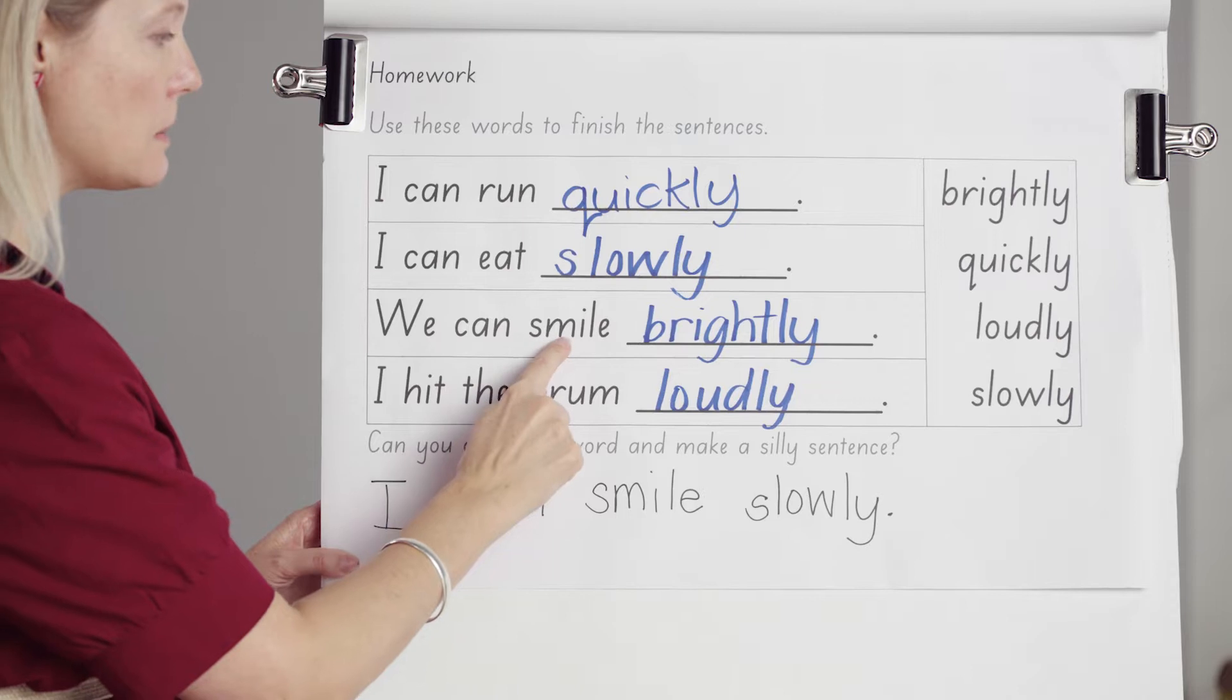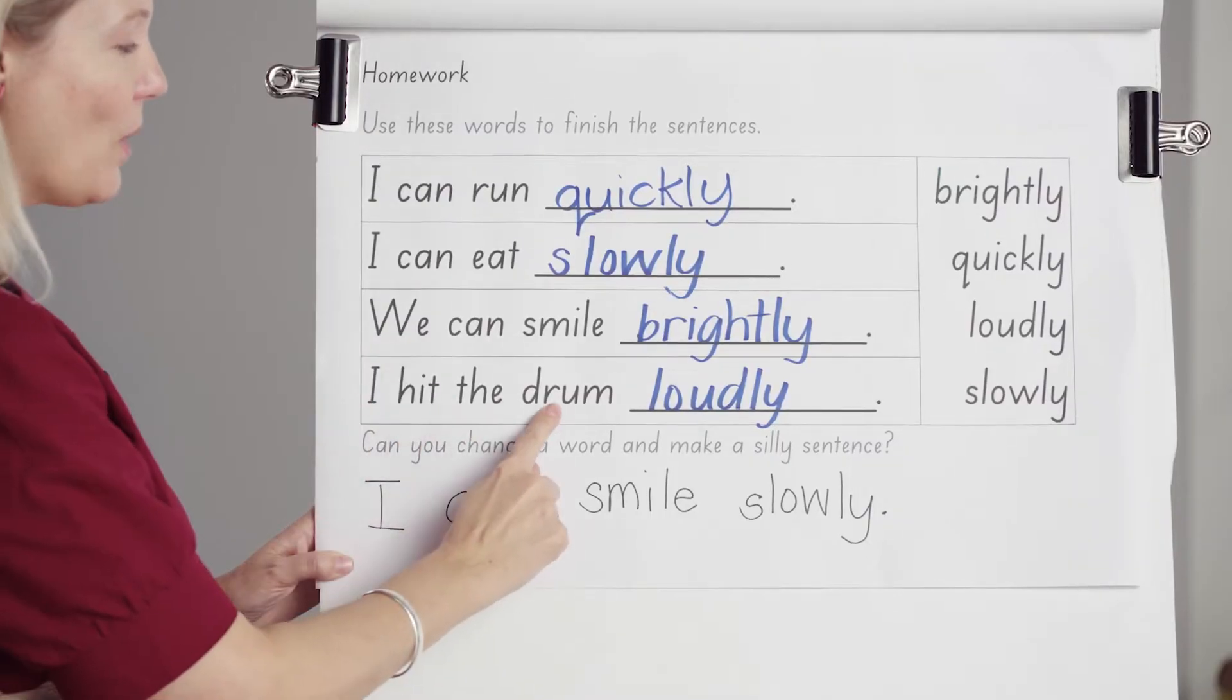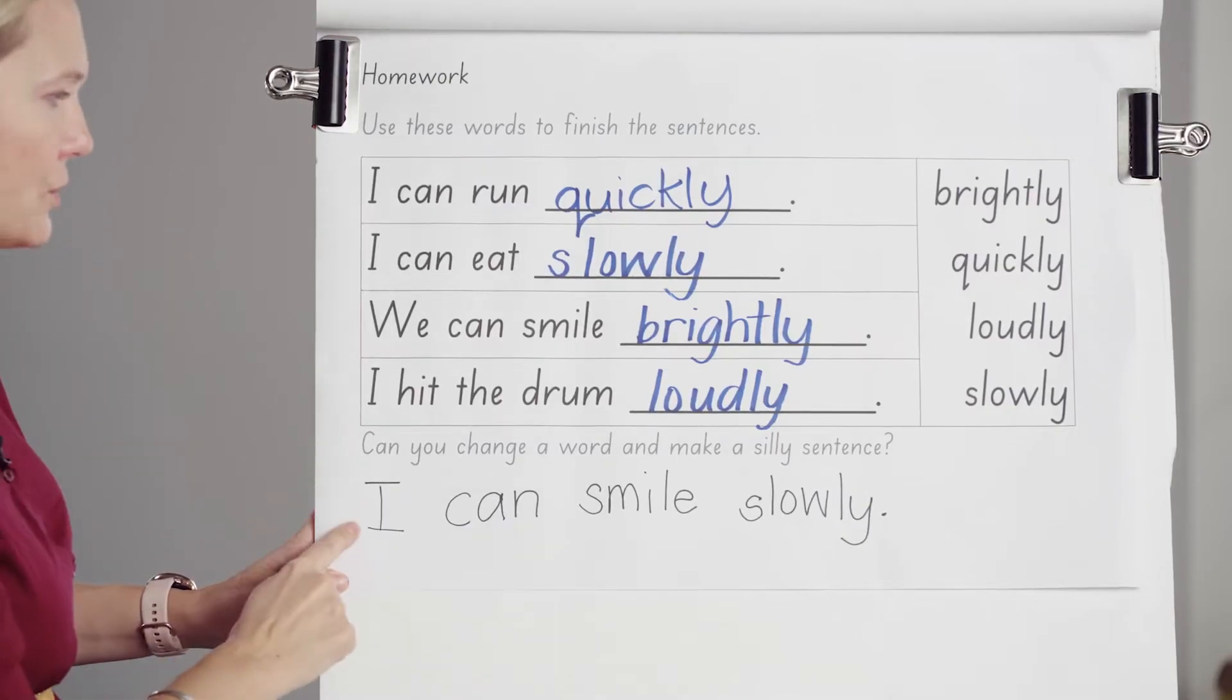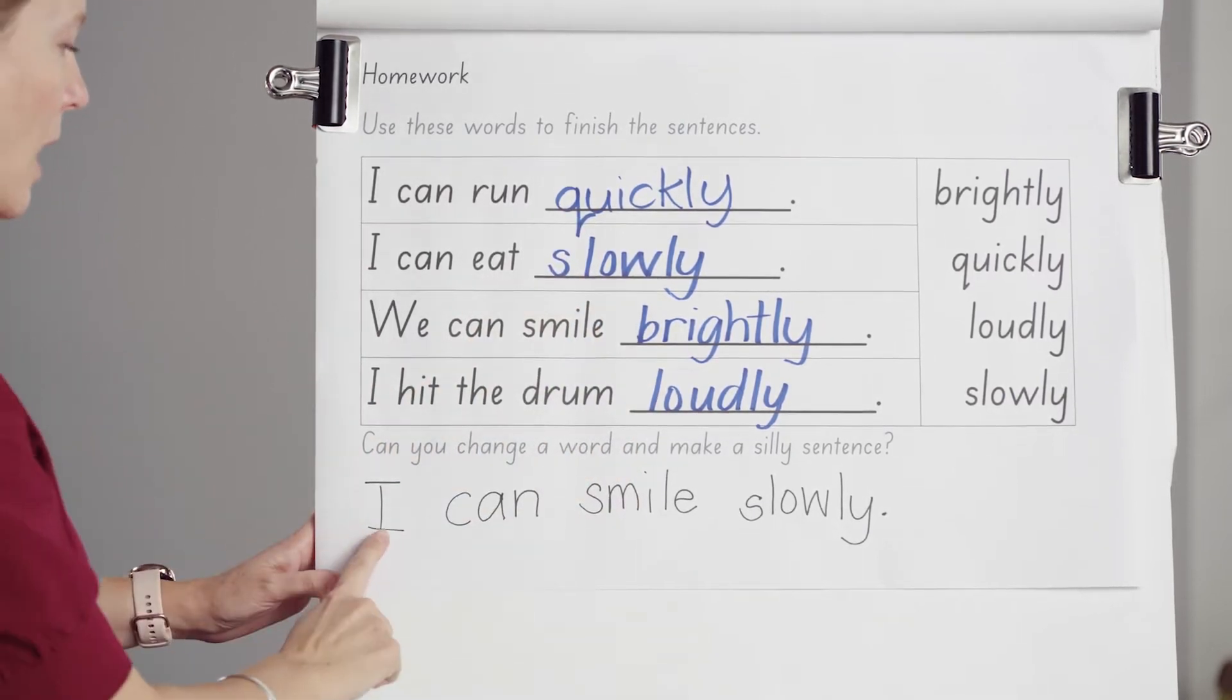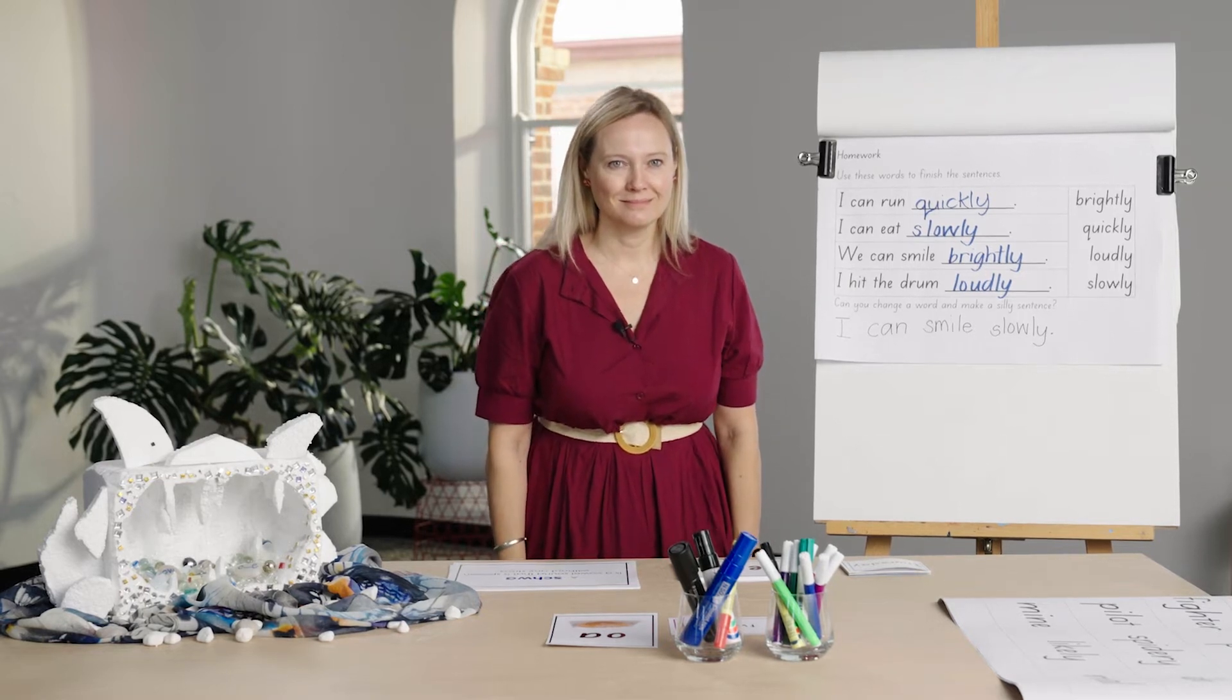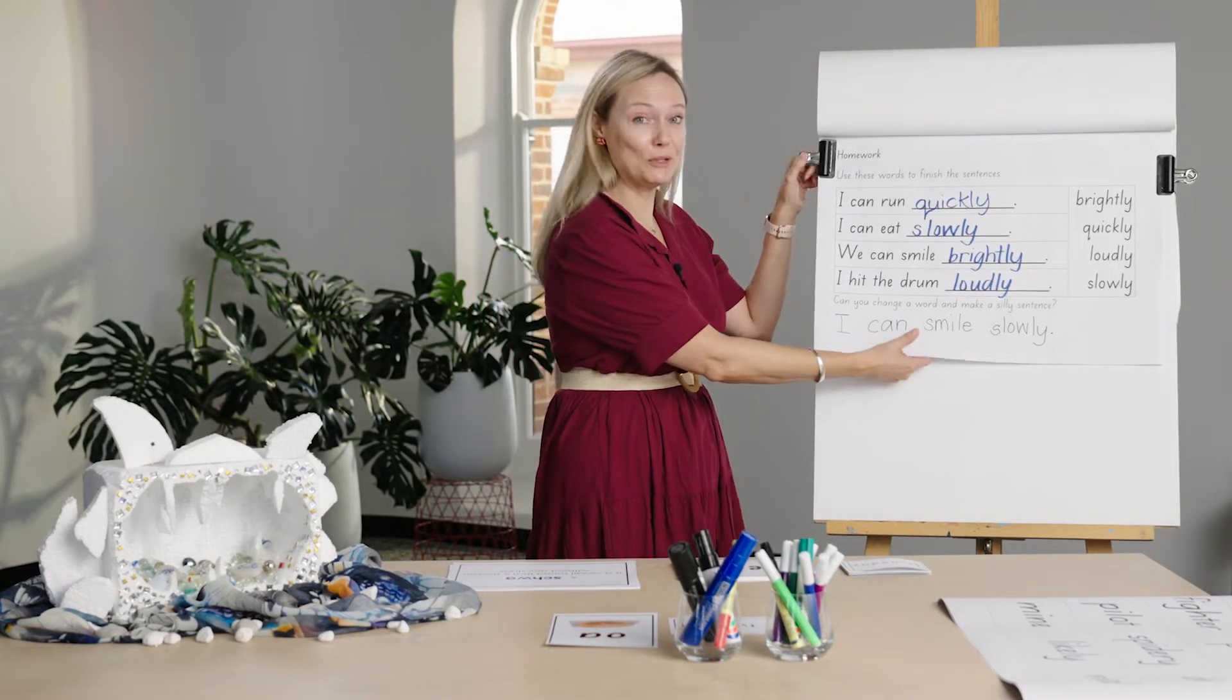We can smile brightly. Can you smile brightly? I hit the drum loudly. Don't do that, mum and dad might not like that. Now, the last part of your homework was to change a word and make a silly sentence. Read mine. I can smile slowly. Shall we try that? I don't like that. Let's smile quickly. That's much better. I hope you enjoyed doing that homework.